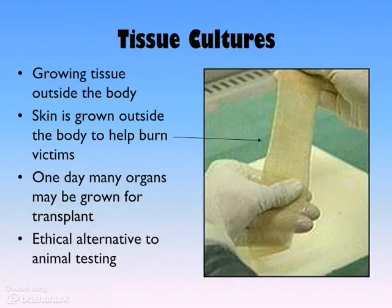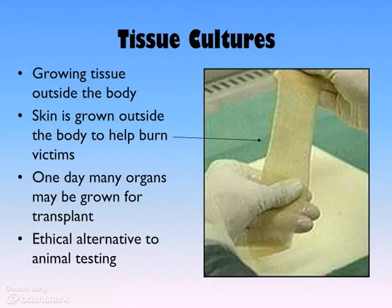Tissue culturing also provides an opportunity for ethical alternatives to animal testing. Right now, quite a bit of testing is done on vertebrates — on rabbits, dogs, cats, monkeys, rats, and all kinds of organisms — oftentimes subjecting them to harm, pain, and even death. Tissue culturing can provide an alternative by testing compounds on tissues to see if there's damage, rather than damaging whole organisms.